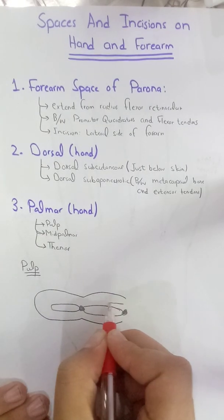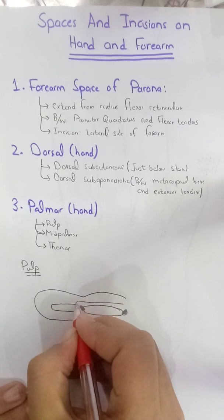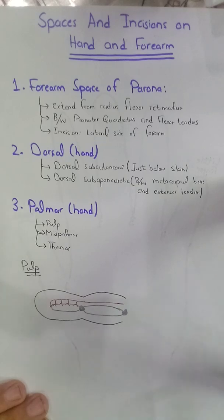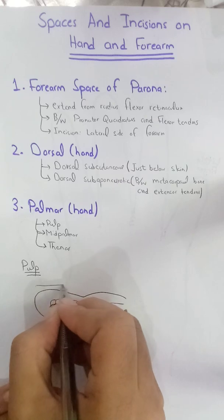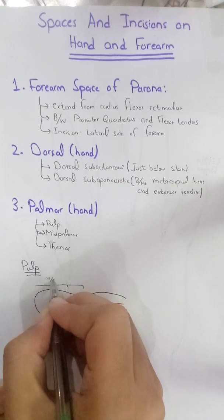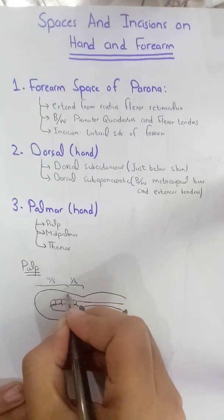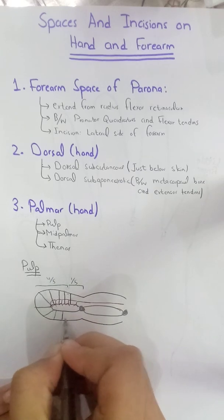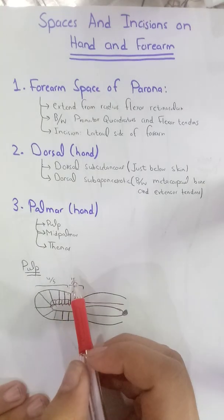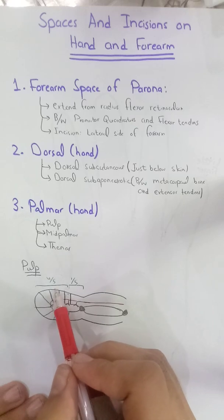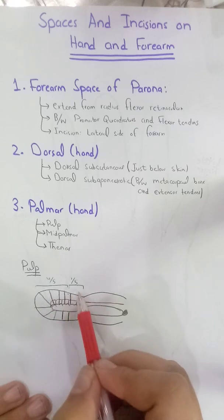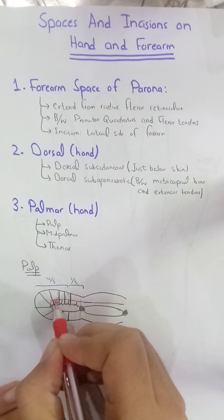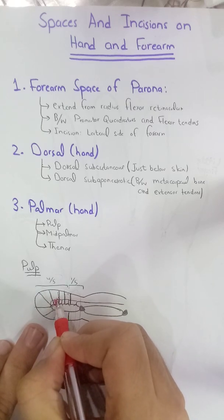Looking at the distal phalanx, there are septas in the distal four-fifths of the finger, while the proximal one-fifth has no septas. If there is an injury in the distal four-fifths, this will cause necrosis of that part, because the septas prevent any other artery from supplying the injured area. In the proximal one-fifth there are no septas, so necrosis does not occur.